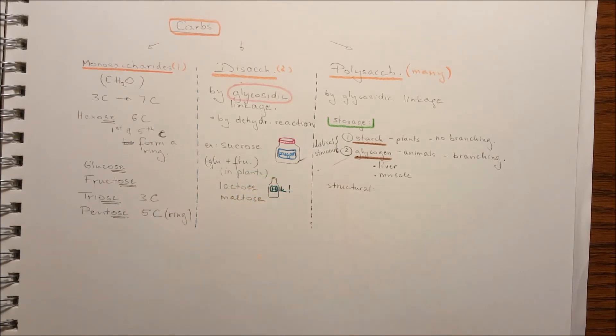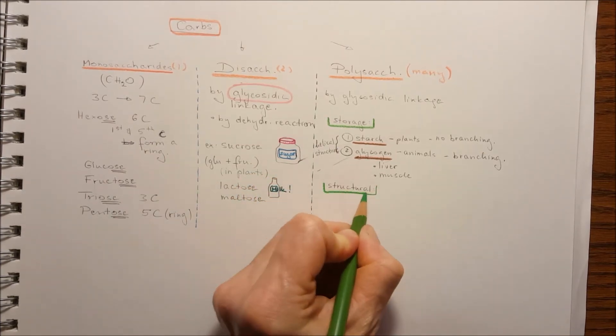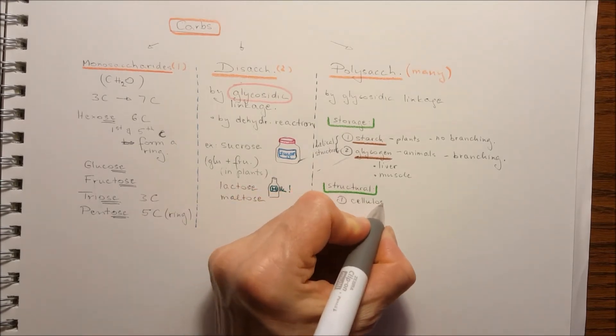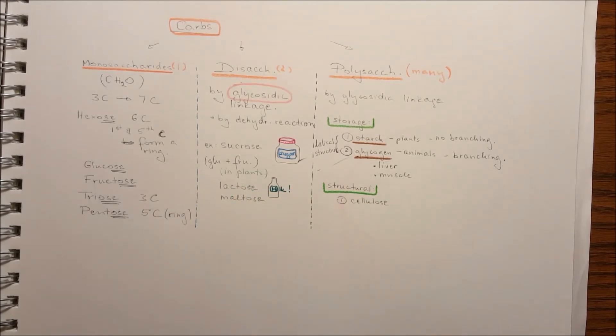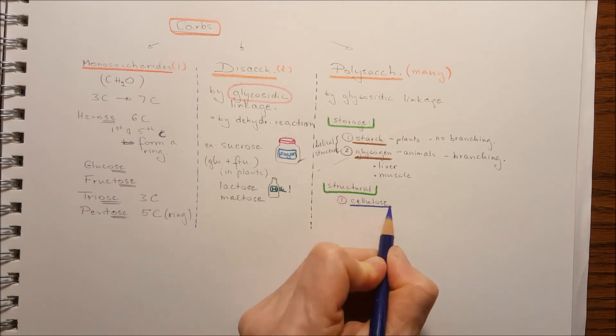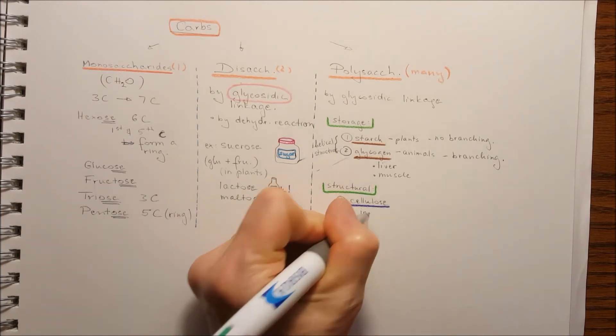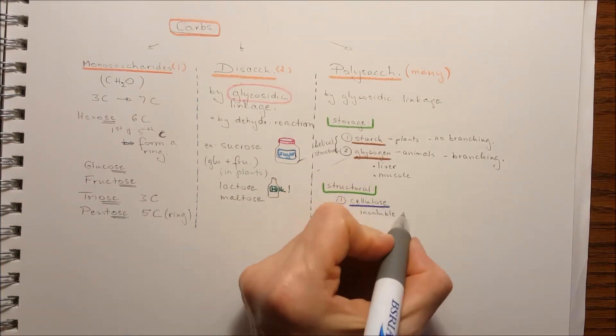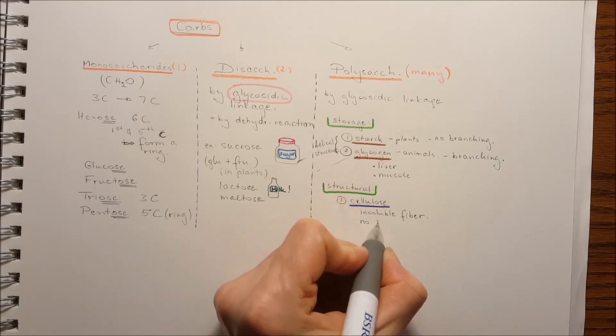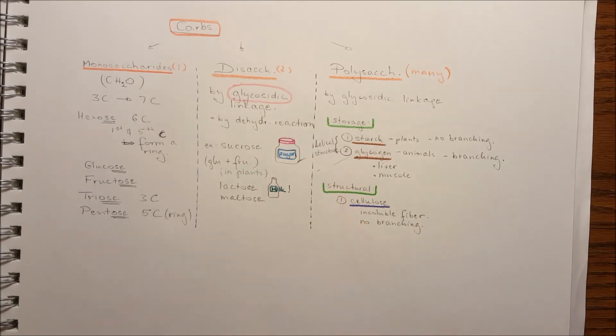The other function for the polysaccharides can be structural. They act like structural components of the cells, like cellulose. The cellulose is insoluble fiber. We cannot digest. It's not branching.